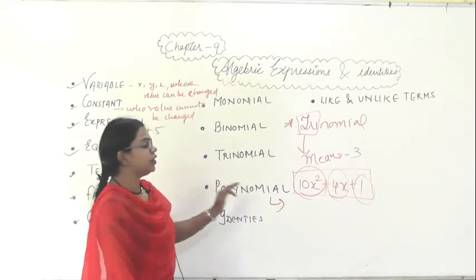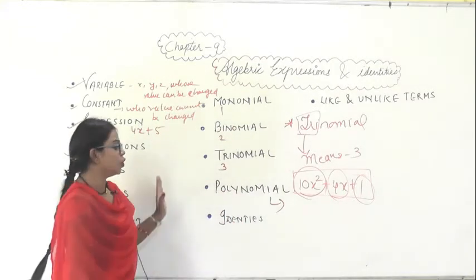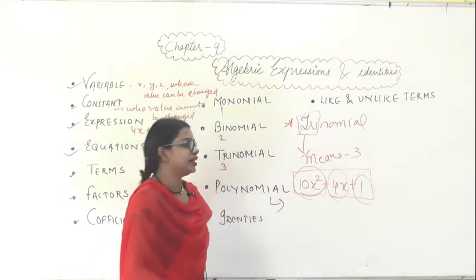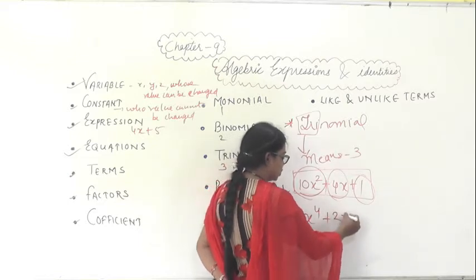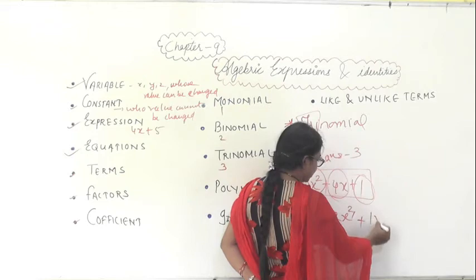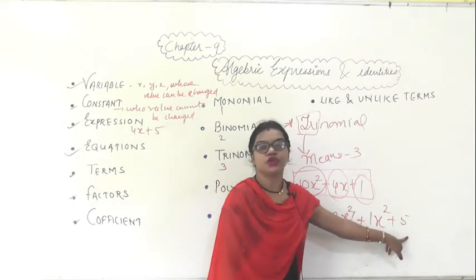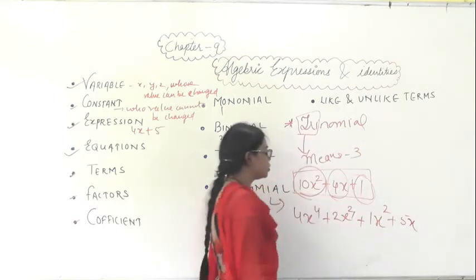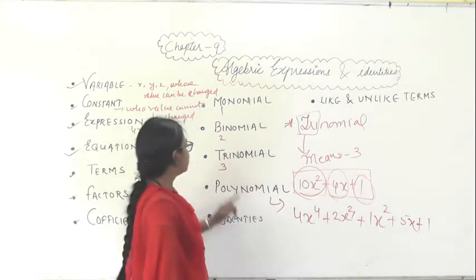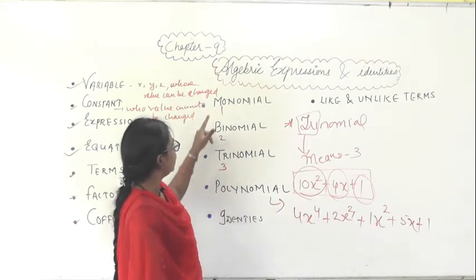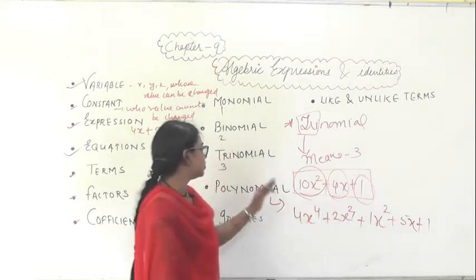What is polynomial? If monomial is 1, binomial is 2, trinomial is 3 — does polynomial mean 4? No, it is not like that. Polynomial means it can contain n numbers of terms. Suppose if I write 4x to the power 4 plus 2x to the power 3 plus 1x squared plus 5, here there are 4 terms. In polynomial, terms can exceed more than 3.